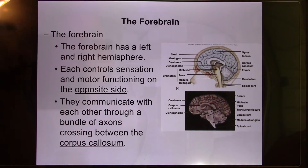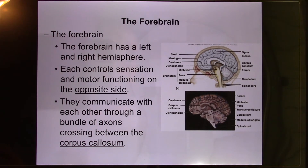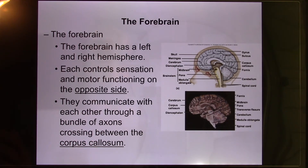Now we'll look at different brain areas and their functions. A lot of what we know about brain function comes from patients who damaged certain brain areas, and we observed their behavior change — that's how we associate brain areas with their functions. Sometimes this was discovered by accident, while doctors tried to cure a patient.